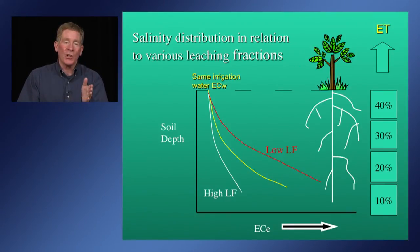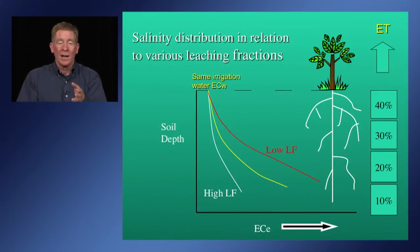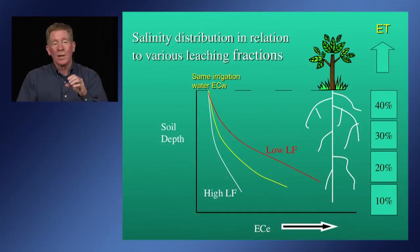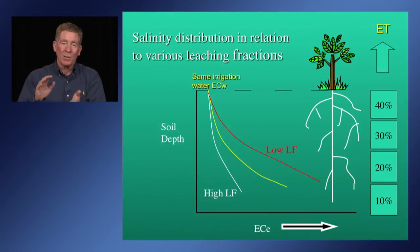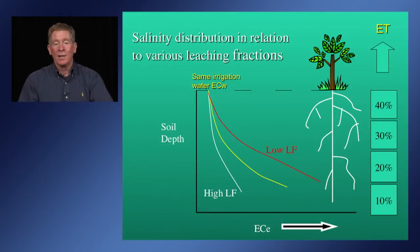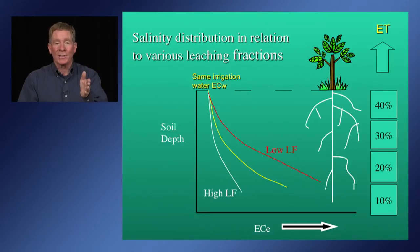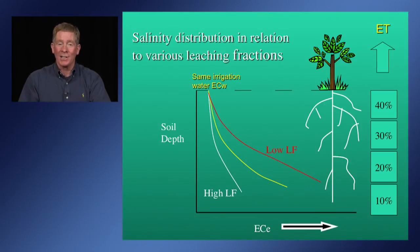It's also important to look at salt distribution in the profile. Crop water extraction patterns show the root system broken into four quarters, with 40% uptake in the top quarter, 30% in the next, 20% in the third, and 10% in the bottom — representing about 90–95% of active roots. Under a low leaching fraction, salts increase much more rapidly with depth than under a higher leaching fraction. This means that for a given irrigation water salinity (ECw), you can have very different average root zone salinities (ECe).